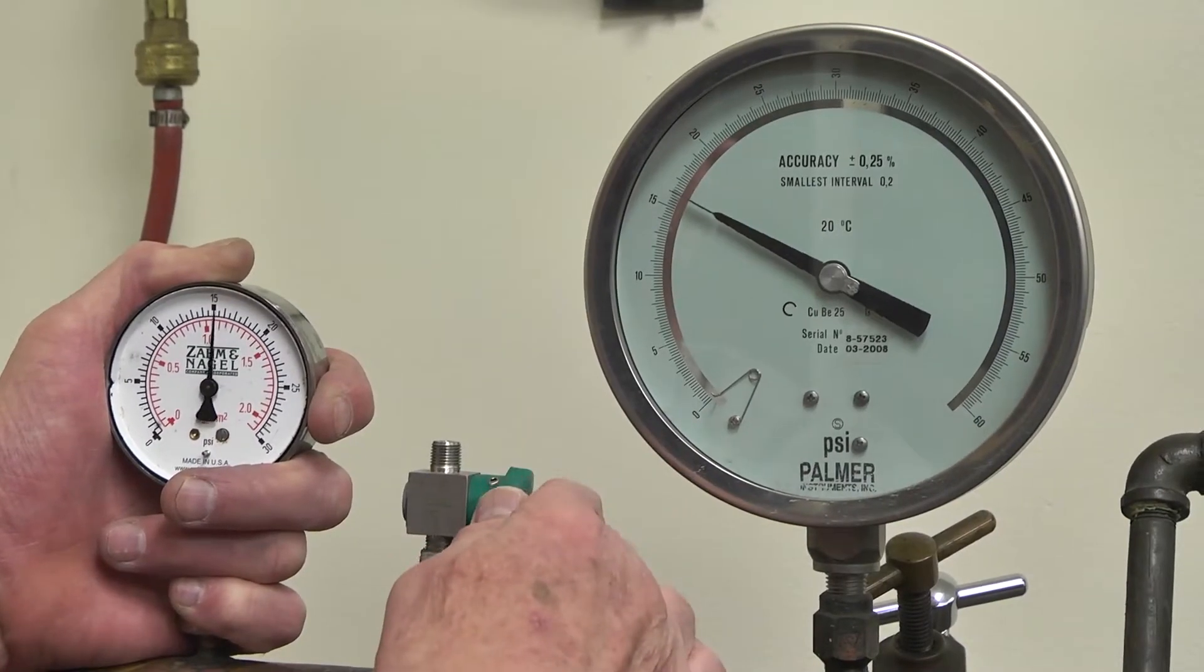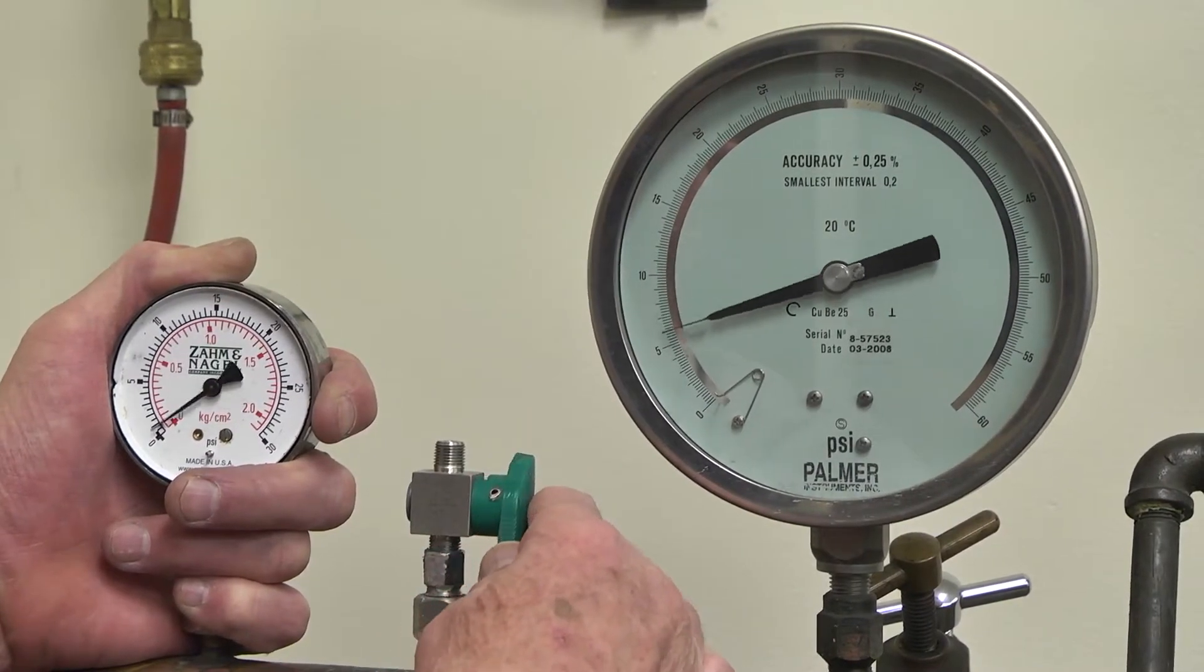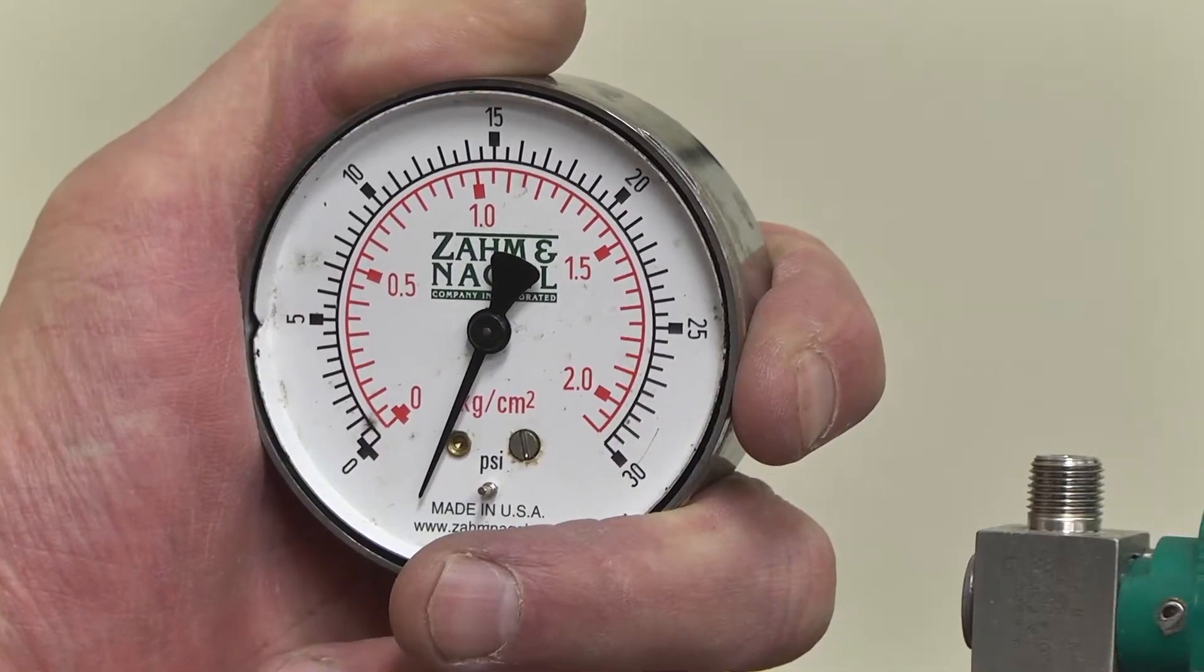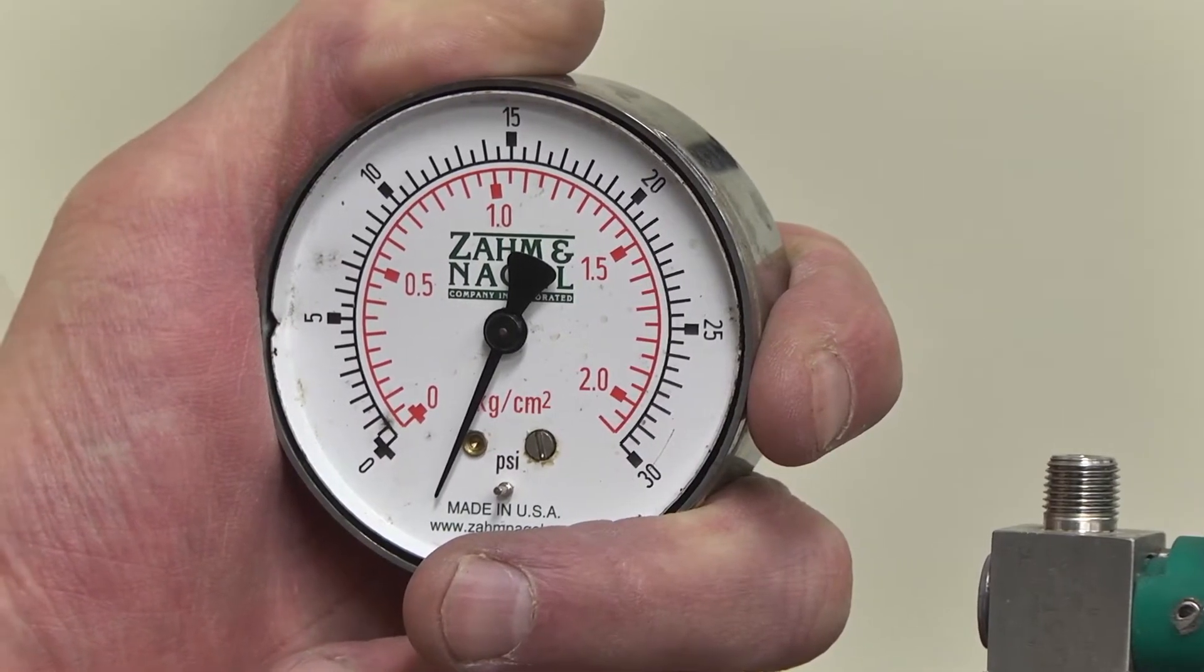Release the pressure on the gauge tester. The pointer may rest anywhere within the black zero range of the gauge. If it falls outside it, the gauge needs to be replaced.